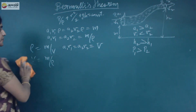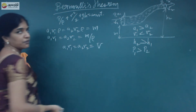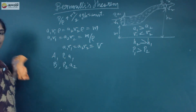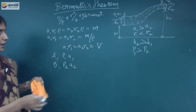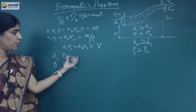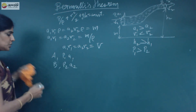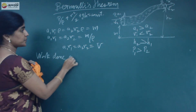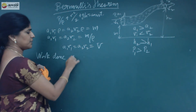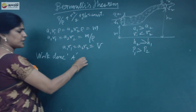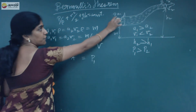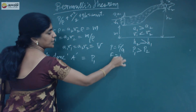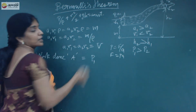The force acting on the liquid at point A is P1A1, and at point B it is P2A2. Work done on the liquid at point A equals force times velocity. Since pressure P equals force per unit area, force equals P1A1.